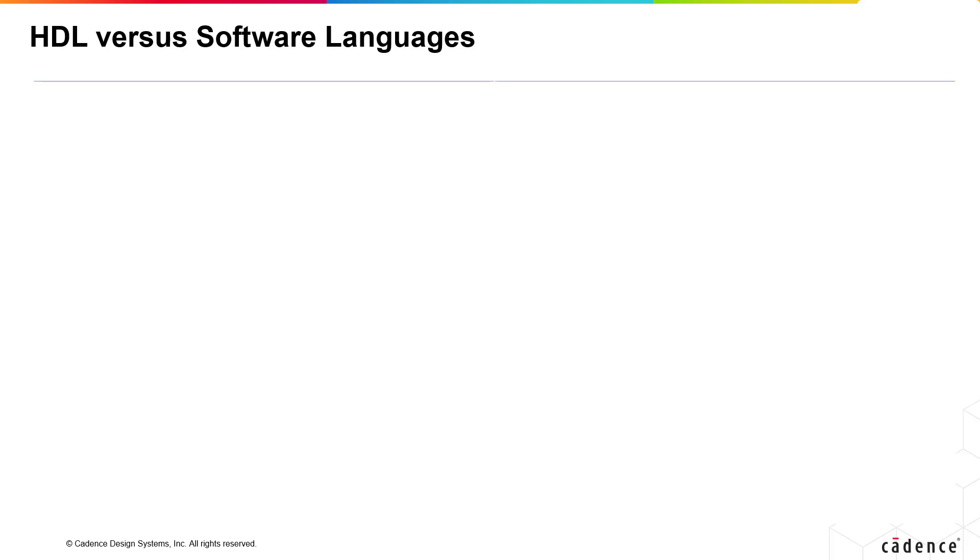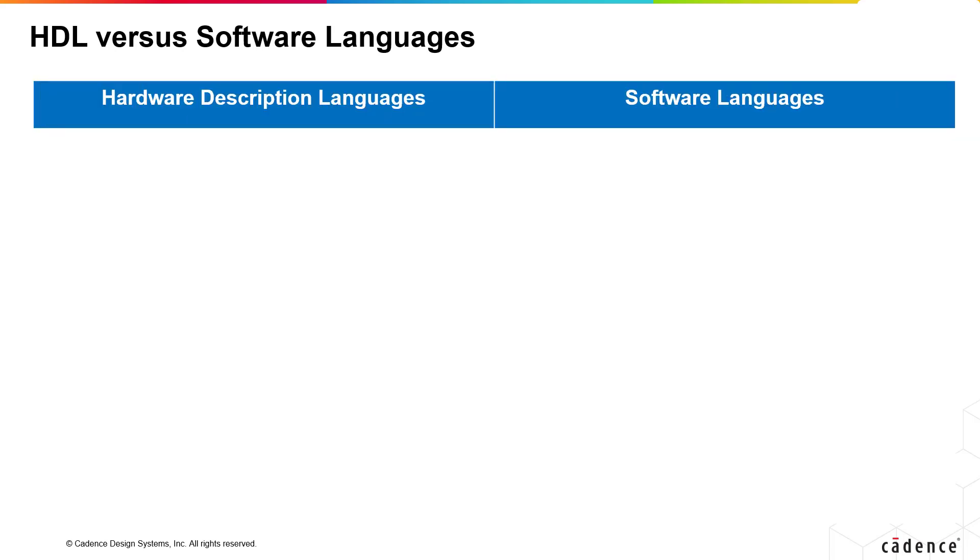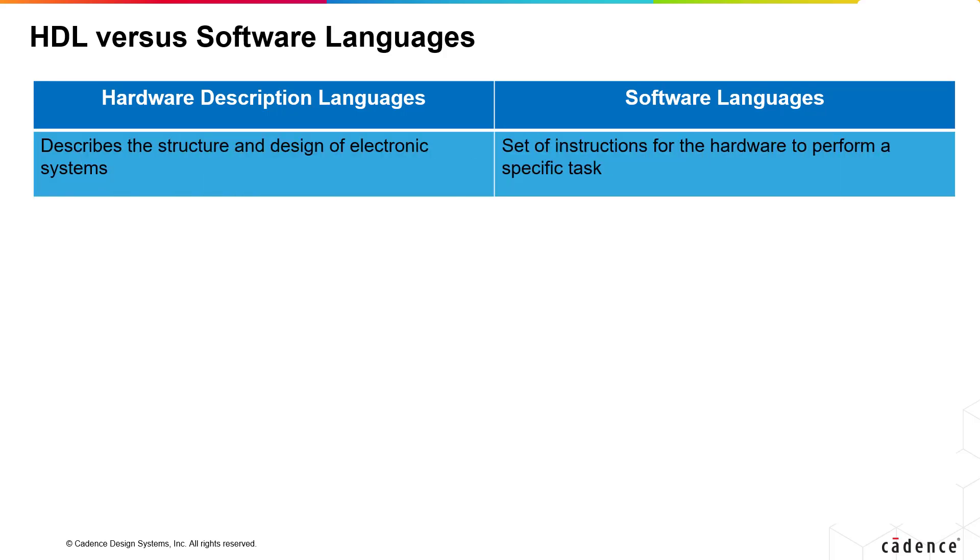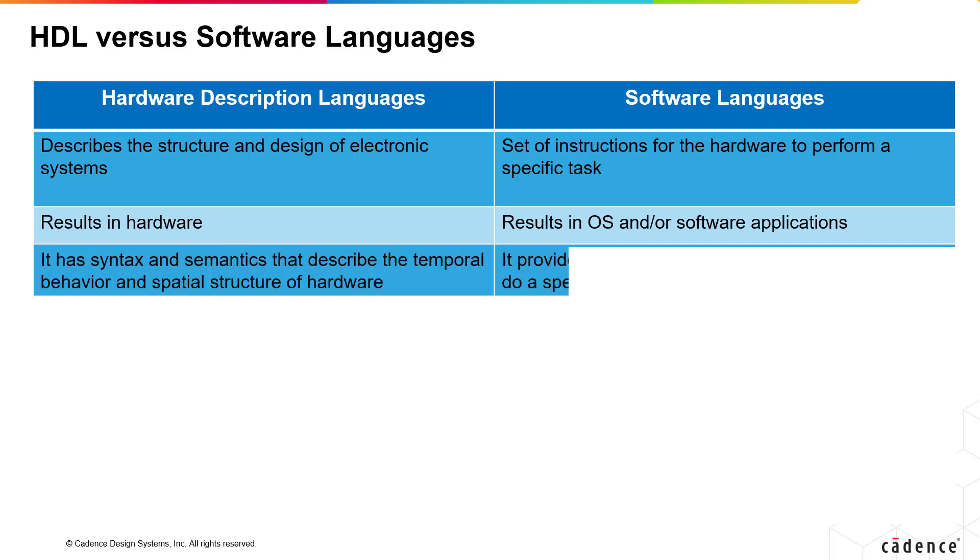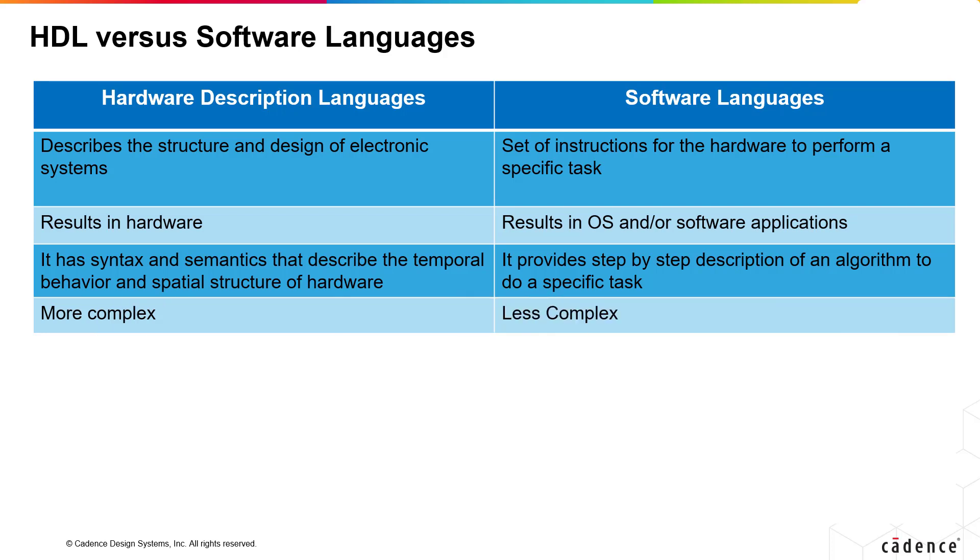Let us summarize the difference between HDL and software languages. HDL describes the structure and design of electronic systems, whereas software languages provide a set of instructions for the hardware to perform a specific task. HDL results in hardware, software languages result in OS or software applications. It has syntax and semantics that describe the temporal behavior and spatial structure of hardware, whereas software languages provide step-by-step description of an algorithm to do a specific task. HDLs are more complex in nature than software languages.